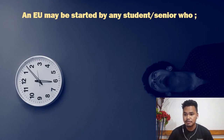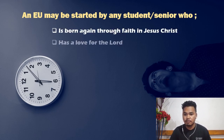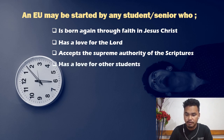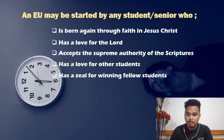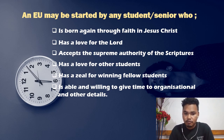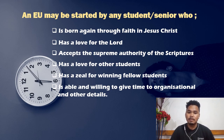An EU may be started by any student or senior who meets these qualities: first, he or she has to be born again; must have a love for the Lord and accept the supreme authority of the scriptures; have a love for other students; have a zeal for winning fellow students; and be able and willing to give time to organizational and other details. If a person has the burden to reach out to people, they can start an EU.